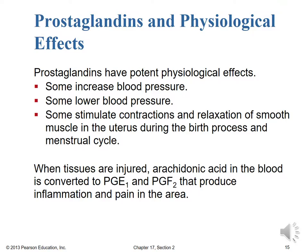Prostaglandins have very potent physiological effects. Some increase blood pressure while others lower it, even though they're structurally quite similar. Some stimulate contractions and relaxation of smooth muscle in the uterus during the birth process and menstrual cycle. When tissues are injured, arachidonic acid in the blood is converted into PGE₁ and PGF₂, producing inflammation and pain in the area of injury. Understanding prostaglandins helps us understand how to treat inflammation and pain resulting from injury.